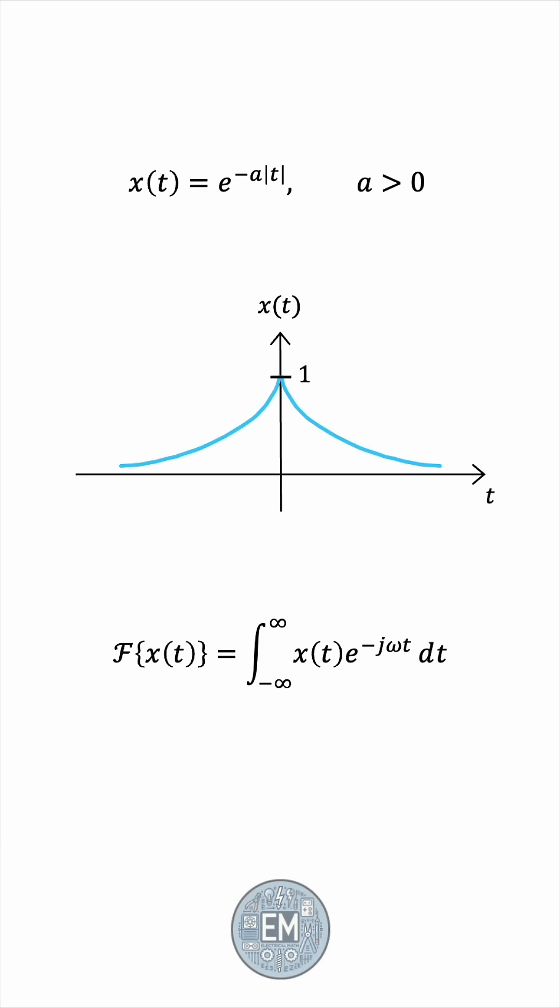Where omega is the angular frequency. In this case, our signal is e to the negative a absolute value of t, which is defined differently on both sides of the origin. On the positive time axis, this is e to the negative a t, the decaying exponential, but on the negative time axis, this becomes e to the positive a t, the growing exponential.